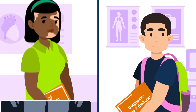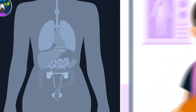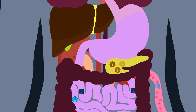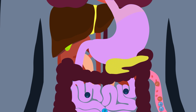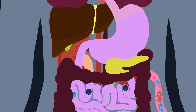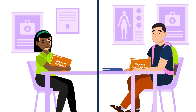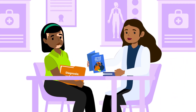Type 2 diabetes develops over time as a result of external factors such as physical fitness, family history, and age. It occurs because a person's body no longer responds to the insulin produced by the pancreas, causing glucose to build up in the bloodstream. Almost 95 percent of people affected by diabetes in the United States have type 2 diabetes.